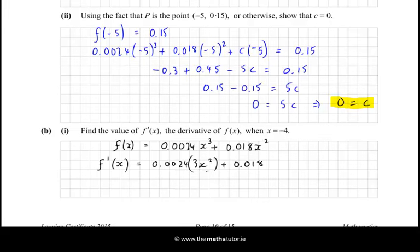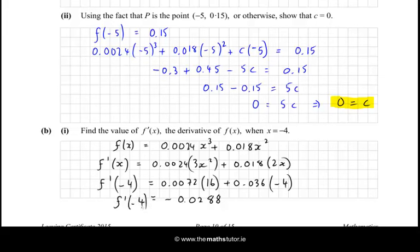So the x cubed goes to 3x squared, and the x squared goes to 2x. And now we need to sub in -4, so 3 times 0.0024 is 0.0072, and then x squared would be (-4) squared, so that would be 16, and then 2 times 0.018 is 0.036, and then the x goes in as -4. And if we evaluate all of that, we get, throw it all in the calculator, and it is -0.0288, so that's f'(-4), which is the slope of the tangent to the curve when x equals -4.